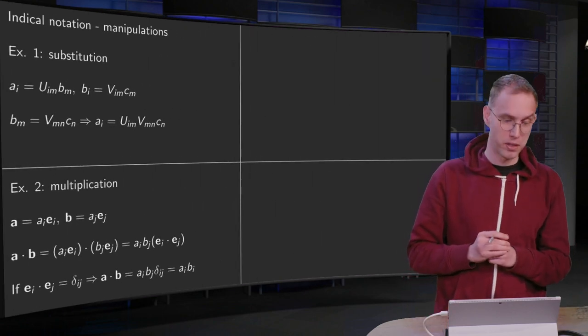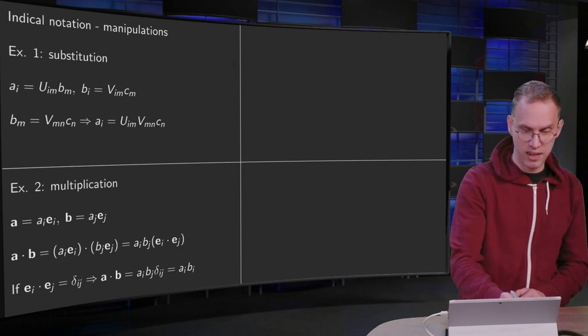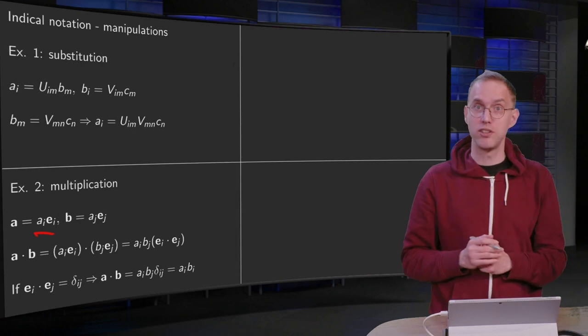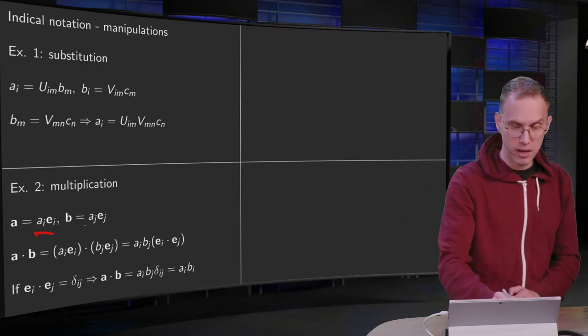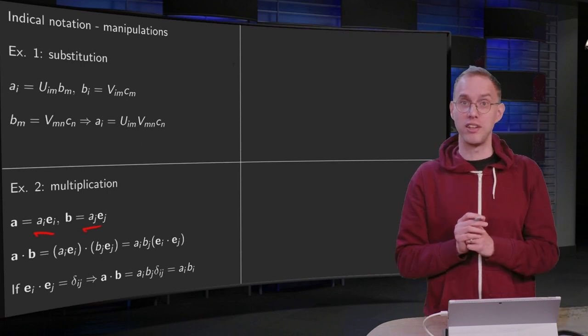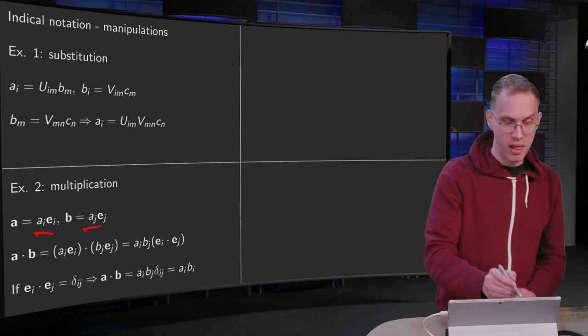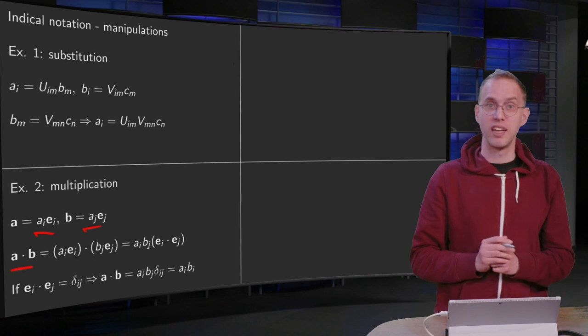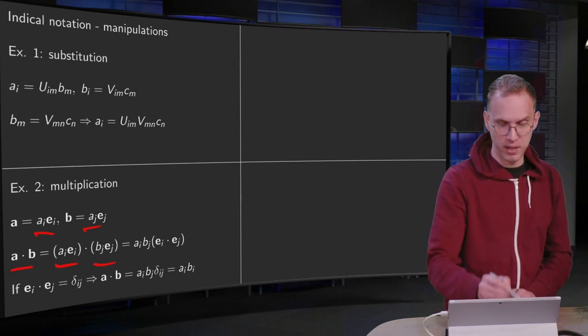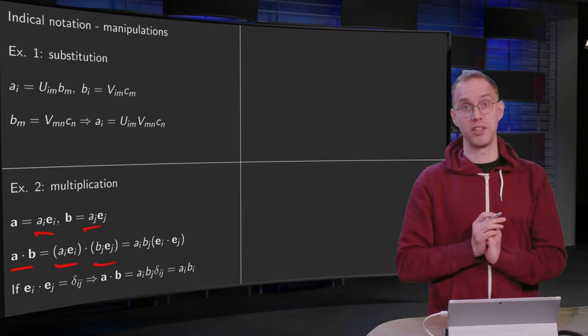Second example: multiplication. So suppose we have a vector A written as a_i e_i, so expanded in terms of the standard basis, and B as a_j e_j, also expanded in the standard basis. Then we can compute the inner product A · B as follows. Here we have our A and there we have our B. Now the inner product is linear.